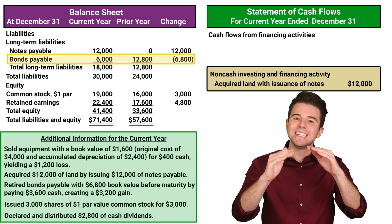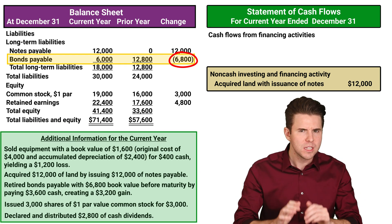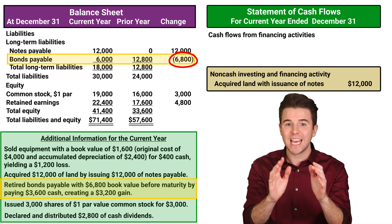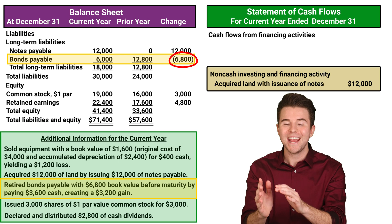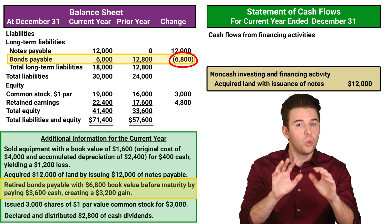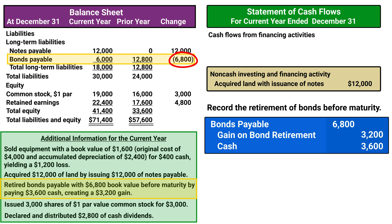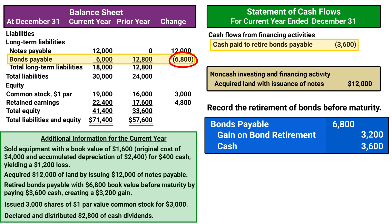Next, we see that bonds payable decreased by $6,800. Looking at our additional information, the company retired bonds payable with a $6,800 book value before maturity by paying $3,600 cash, which created a $3,200 gain. The journal entry would look something like this. The $6,800 decrease in bonds payable is explained by the retirement before maturity. For the cash flow effect, the company paid $3,600 to retire the bonds. Therefore, we report $3,600 cash paid to retire the bonds payable under financing activities.